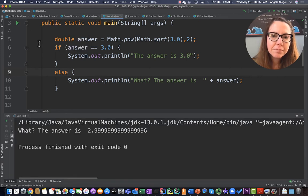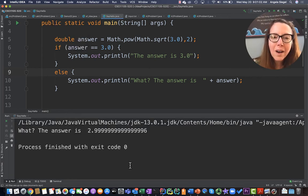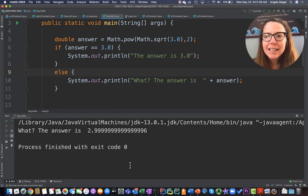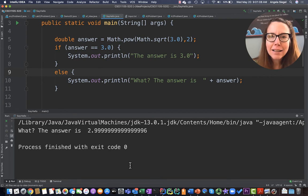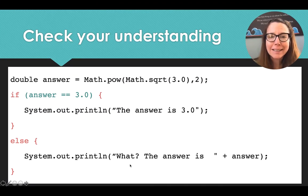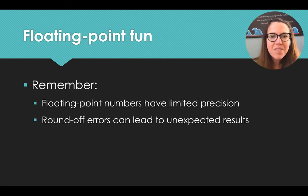If I run this, we'll see that the answer is 2.9999996. Now I know it should be exactly 3.0. Mathematically, the answer is 3. However, that's not what's returned.